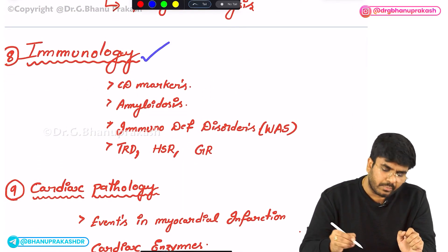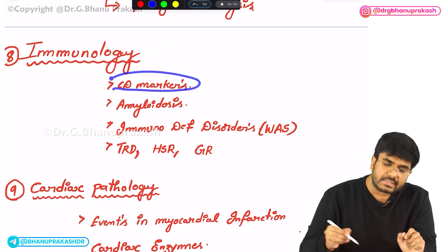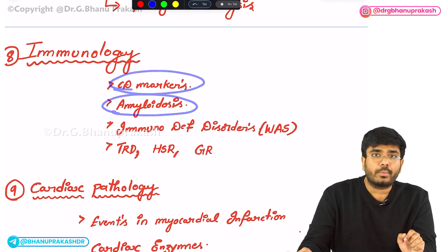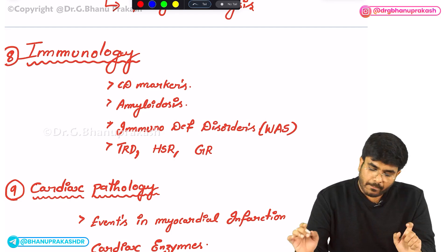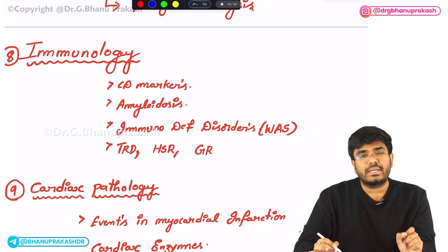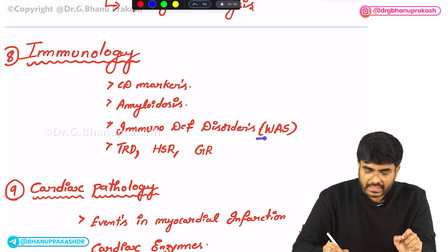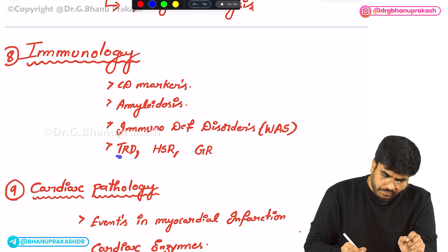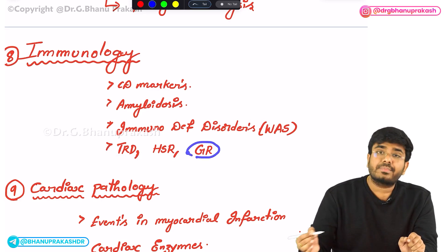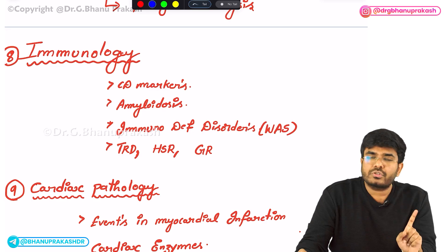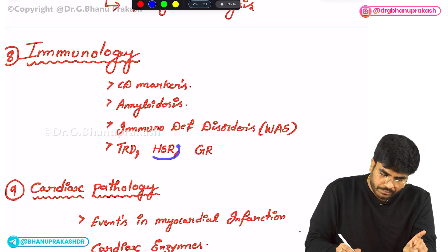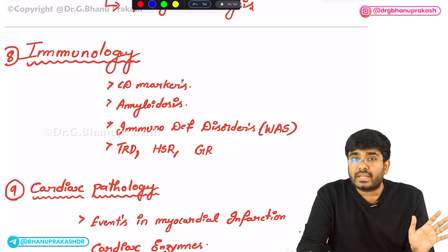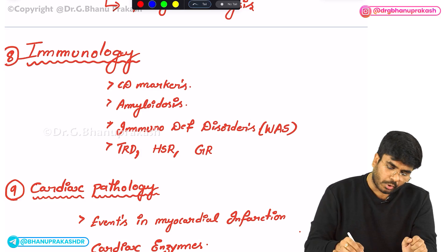In immunology, you have to know about CD markers, amyloidosis, and immunodeficiency disorders — especially Wiscott-Aldrich syndrome. The WASP gene is affected in Wiscott-Aldrich syndrome, so know its clinical features. You have to know about graft rejections: the different types of grafts and different types of graft rejections. You should also know about hypersensitivity reactions — type 1, type 2, type 4 and their examples. These are the important topics in immunology.